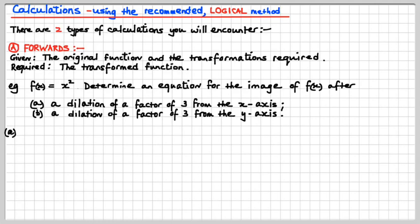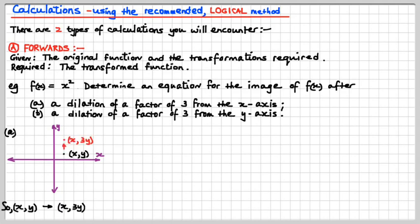For example: f(x) = x² — determine the equation for the image of f(x) after a dilation of a factor of 3 from the x-axis; or a dilation of a factor of 3 from the y-axis. For part A, dilation of a factor of 3 from the x-axis — we're going from the x-axis, so the point (x, y) maps to (x, 3y).